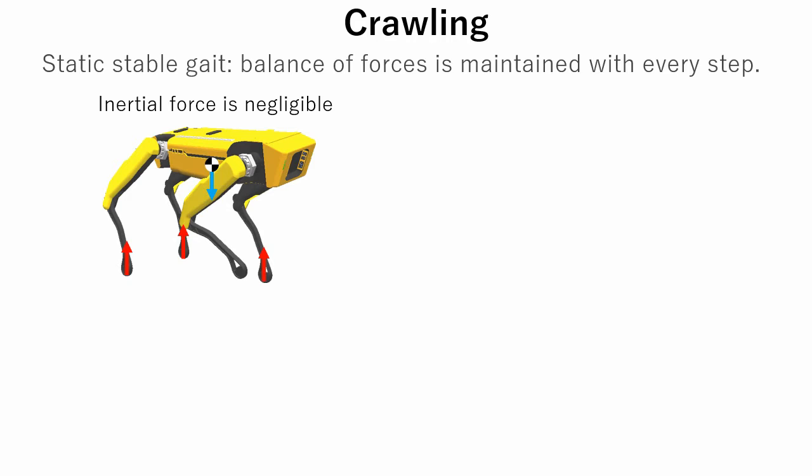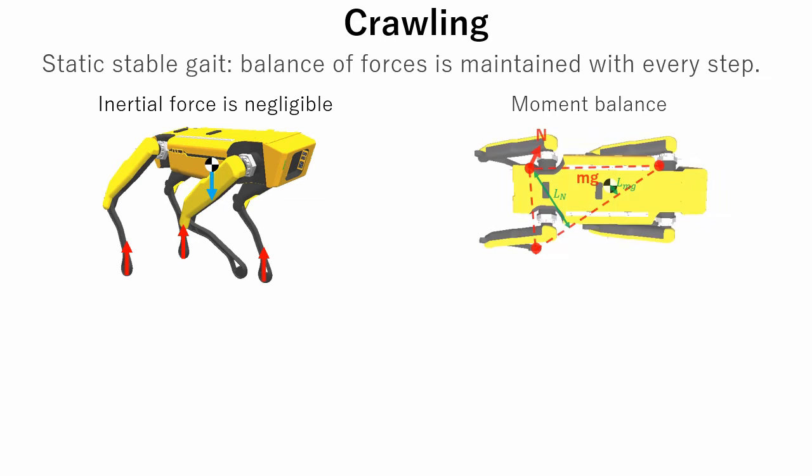While crawling, the robot always has three points of contact with the ground. Also, the sum of moments around the line connecting two diagonal contact points with the ground should be more than zero. In other words, the center of mass should always be inside the triangle of ground contact points.